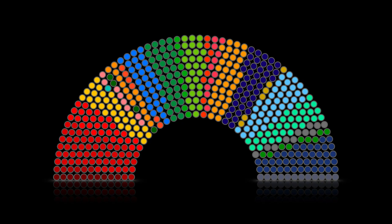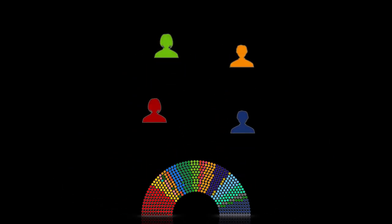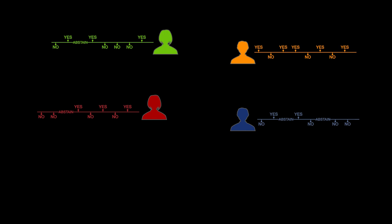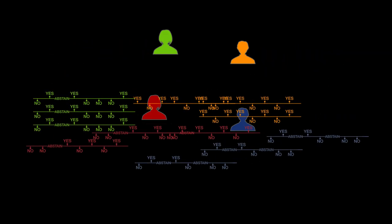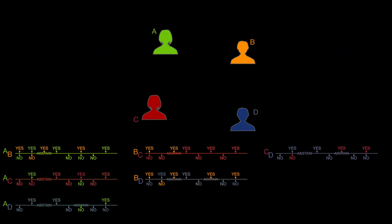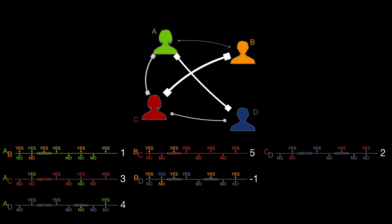So how do we go from the Chamber of Deputies to a network? First, we select some representatives, and for each representative we collect the history of votes on propositions. We then connect those with similar voting patterns. To do that, we assign a score for each pair of representatives: if they agree, the score increases; if they disagree, the score decreases. In the end, we have a full network, but we only allow positive scores to become links. We also apply a backbone extraction method to remove spurious links.